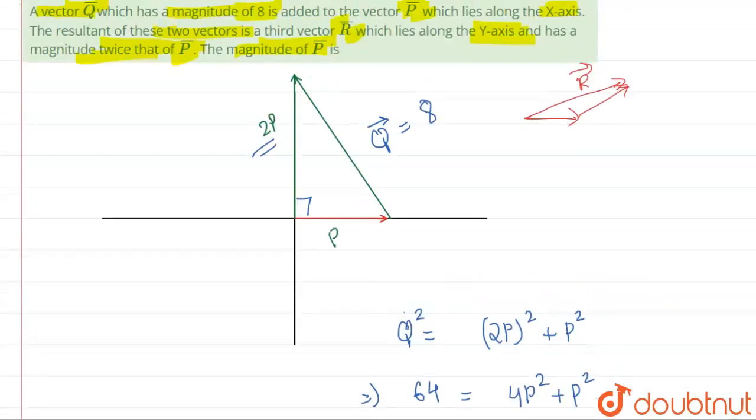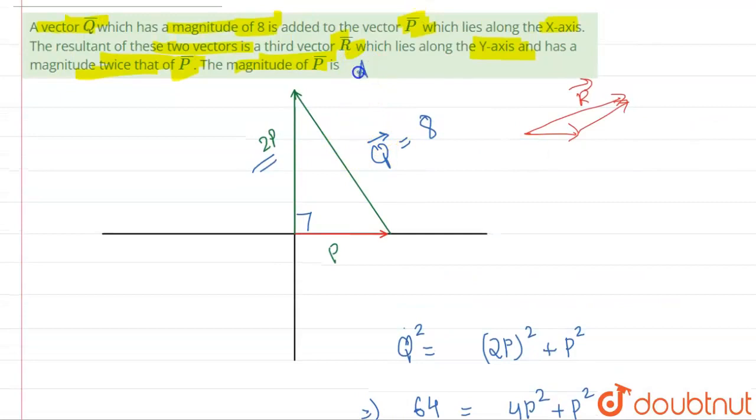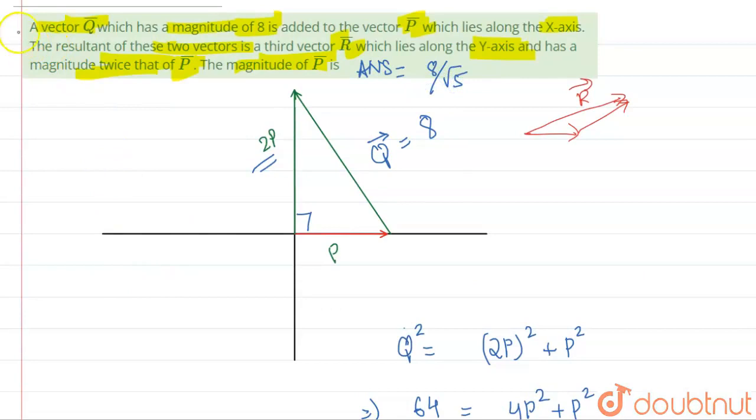So our answer will be the magnitude of P vector will be equal to 8 by root 5. Understood, thank you.